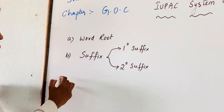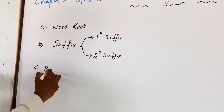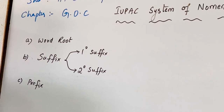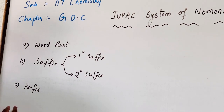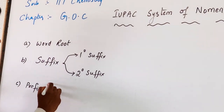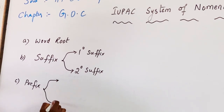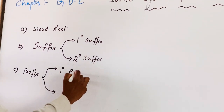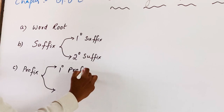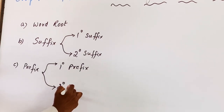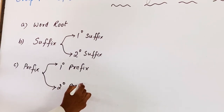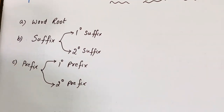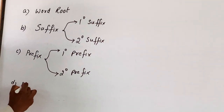Coming to C, that is Prefix — before the Word Root. Prefix is also divided into two types: primary prefix and secondary prefix.